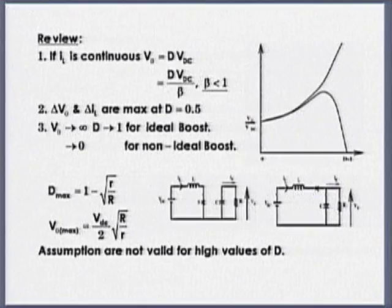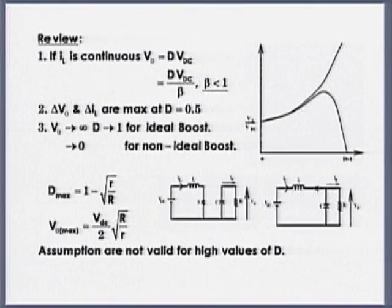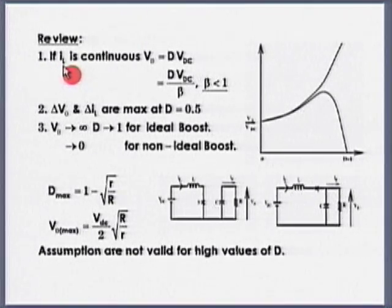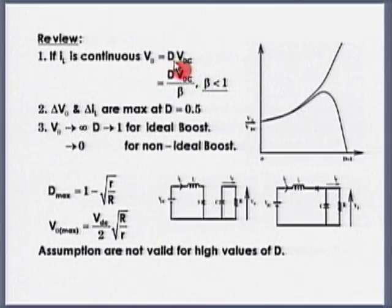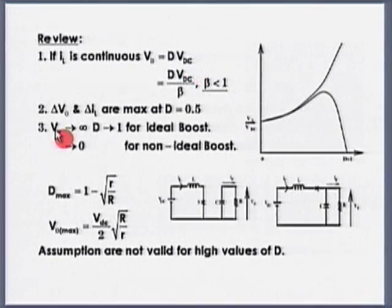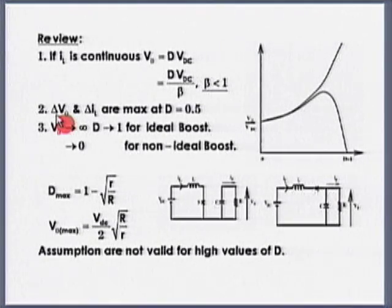Last class we discussed the basic building blocks — one of which is the buck converter. If the inductor current is continuous, output voltage is given by D times the input voltage. The value of L will determine the current ripple and the value of the output capacitor will determine the voltage ripple.